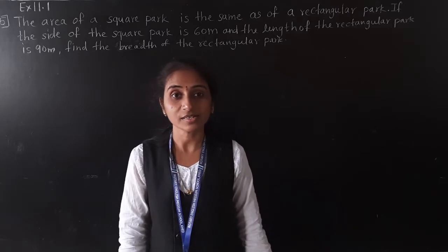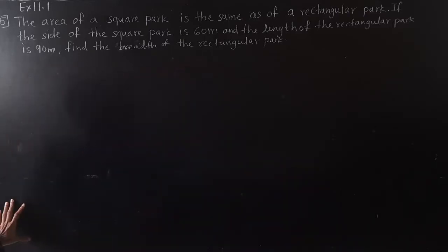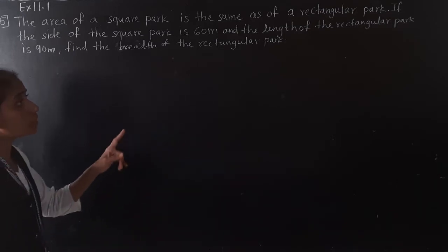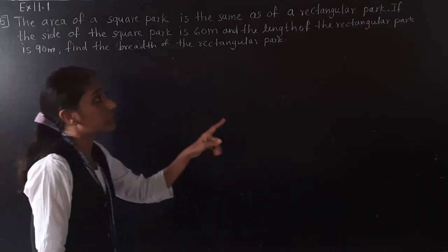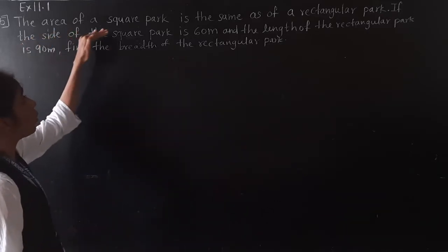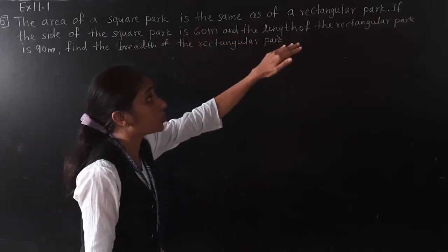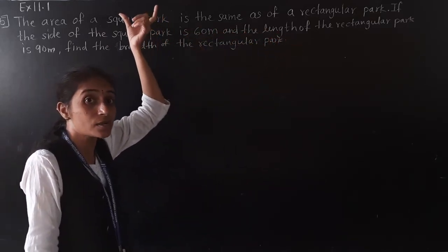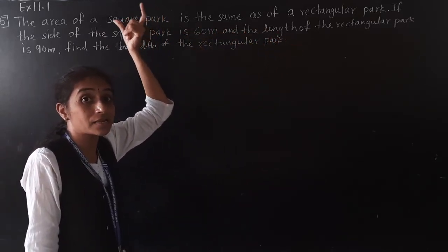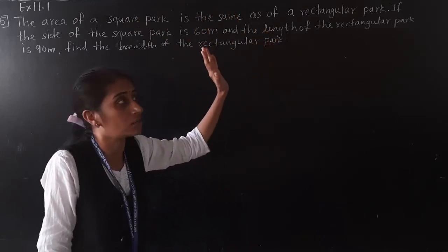Good morning students. Let's start today exercise 11.1 question number 5. The area of square park is the same as the rectangular park. Area of square park is the same as rectangular park — whatever area is for the square park is the same for the rectangular park.